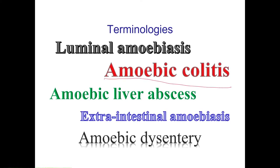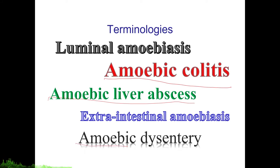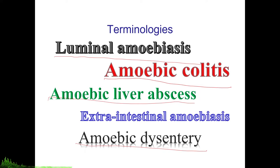In discussing Entamoeba histolytica, it is also important to familiarize ourselves with common terminologies. Amoebic colitis refers to the most common manifestation of invasive amoebiasis, pertaining to infection and invasion of the colon. Amoebic liver abscess refers to the most common manifestation of extra-intestinal invasive amoebiasis. Amoebic dysentery refers to the type of diarrhea produced by Entamoeba histolytica, which is usually bloody diarrhea. Luminal amoebiasis is the type wherein the organism is not able to invade other tissues, remaining in the intestinal lumen.